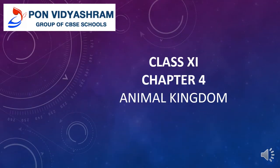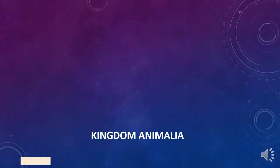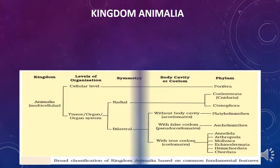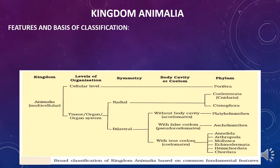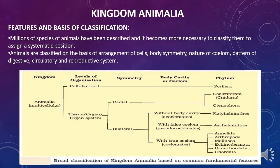Hi students, welcome back. We are in chapter 4, Animal Kingdom, and this is part 1 video. Coming to Kingdom Animalia, the classification helps in easy identification and also in assigning a systematic position to newly described species. Millions of species of animals have been described, and it becomes more necessary to classify them to assign a systematic position. Animals have to be classified based on some features so that we can understand them better.